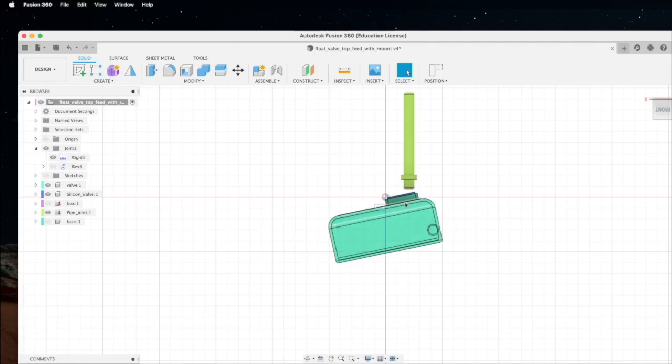As more nutrient comes through, the flow valve will gradually rise to the top. At this position, the silicon block here will seal the inlet. Flow of nutrient will stop.